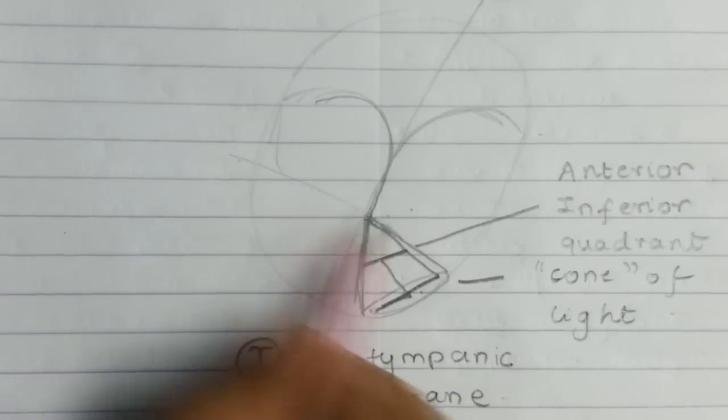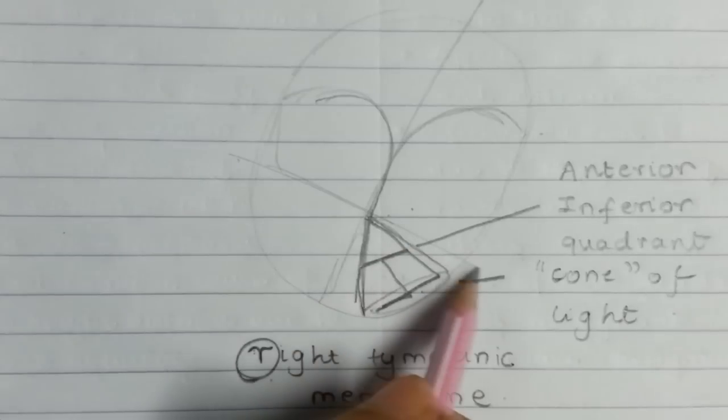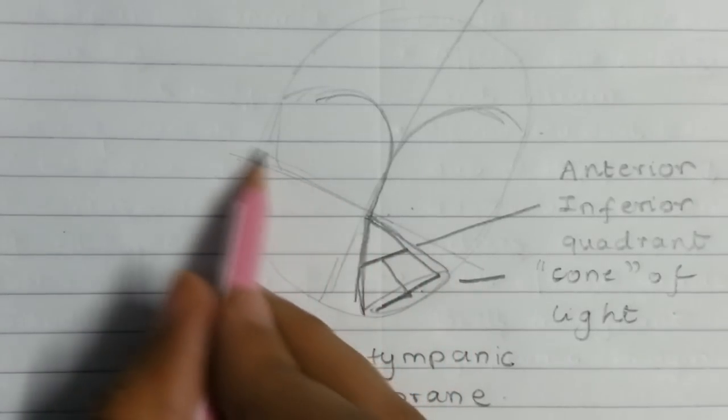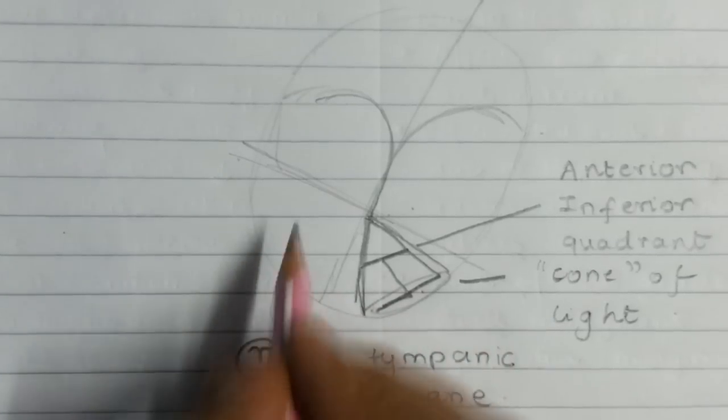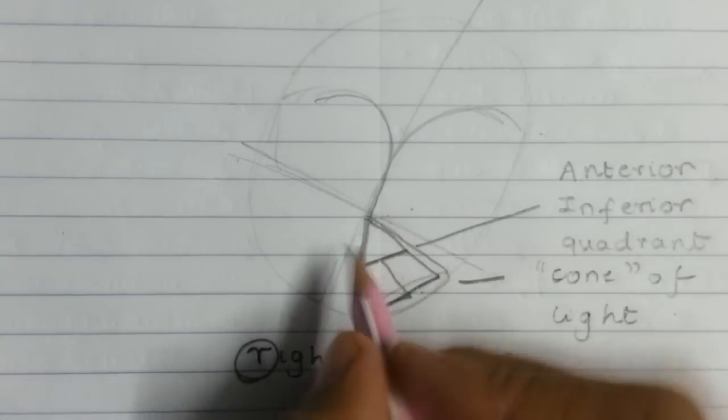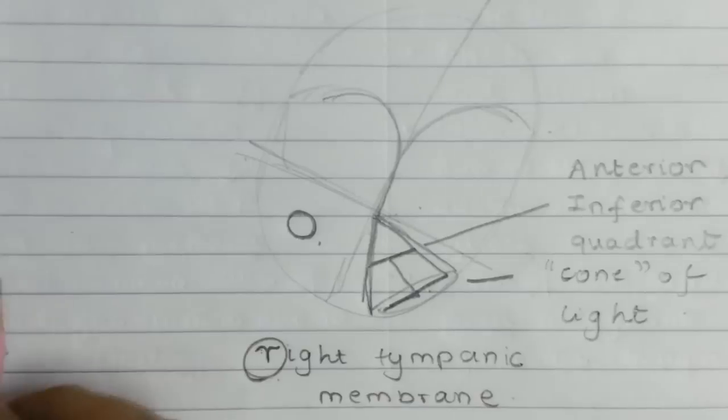Since we already know that the anterior inferior quadrant is where the cone of light is present, the quadrant which is behind it is obviously the posterior inferior quadrant. The other two are the superior quadrants.